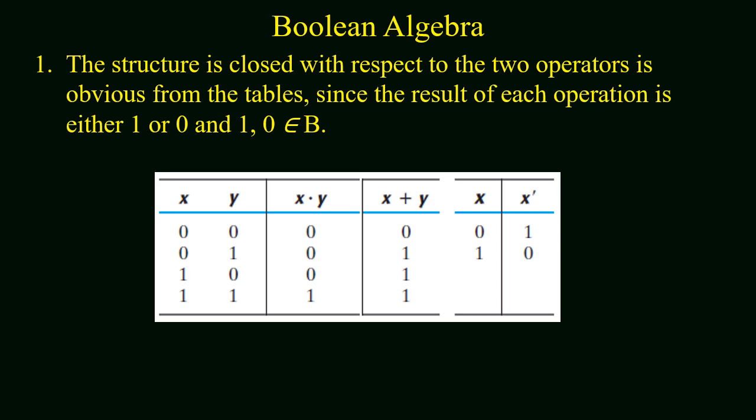Now we will check for closure property with respect to addition or multiplication. If you look at the table, at the input side of the truth table we have two variables x and y. x and y are Boolean variables which have a value of either 0 or 1, and both belong to set B. Now if you look at x dot y column, the result is either 0 or 1.